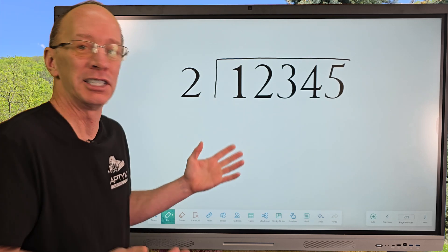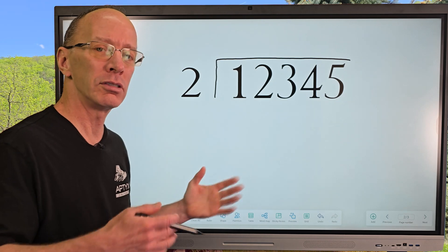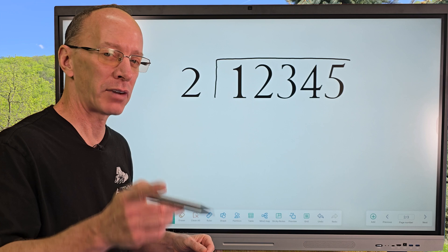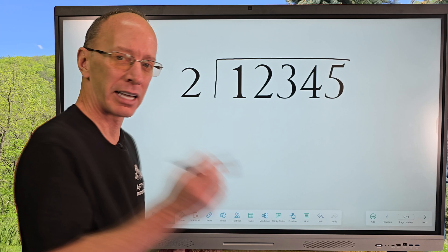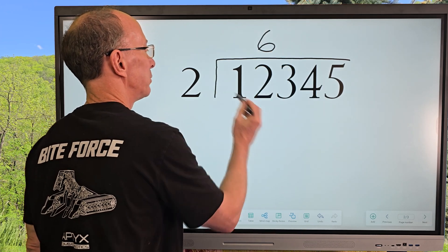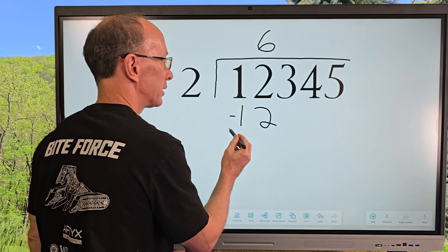So first of all, can I put 2 into 1? You just can't. But I can put 2 into 12, so 2 times what equals 12? 2 times 4 is 8, 2 times 5 is 10, and then 2 times 6 equals 12. So I'm going to go ahead and put the 6, that would be the best choice. So I go ahead and put 6 right here. 6 times 2 is 12.